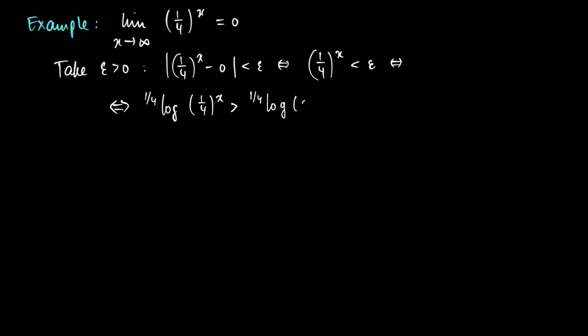Well recall that the function we apply here, (1/4)log, is actually a decreasing function. So if the argument (1/4)^x is smaller than epsilon, then the logs on both sides change sign or change the order.